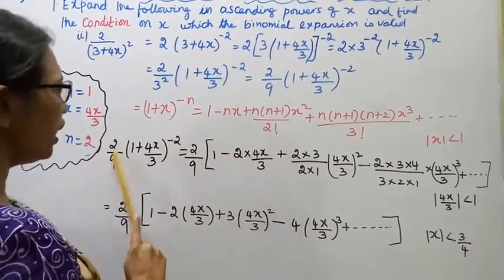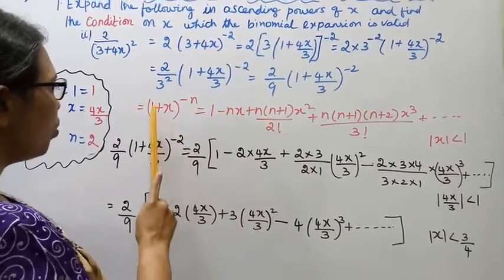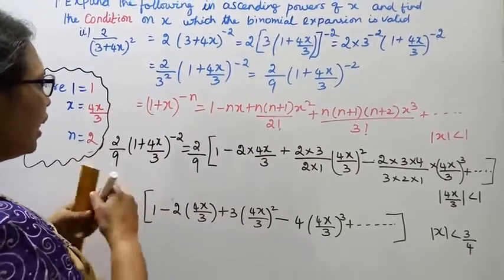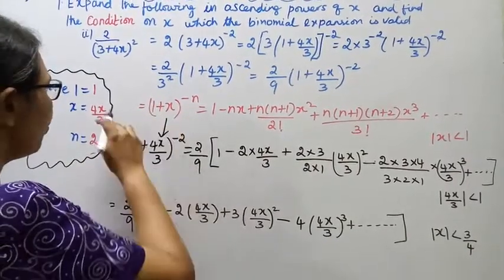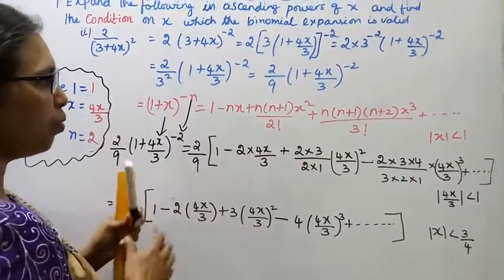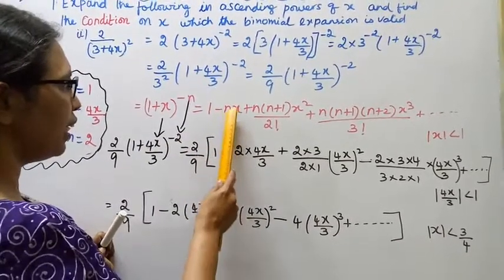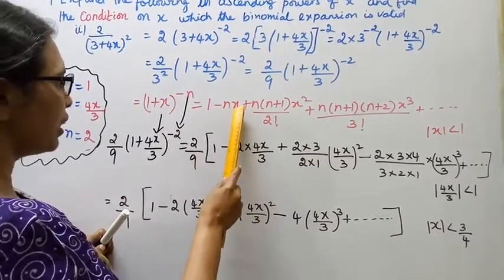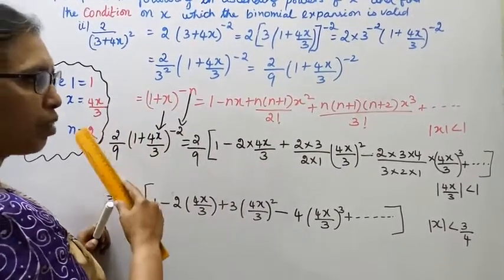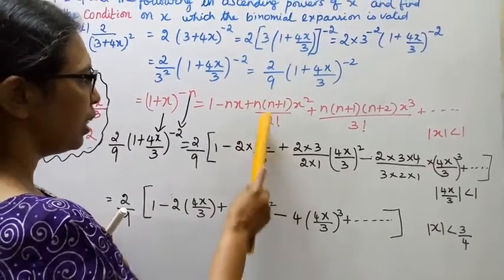We have 2/9 × (1 + 4x/3)^(-2). Here, substituting into the formula: x is replaced by 4x/3, and n is equal to 2. Substitute these values carefully to avoid mistakes — it is straightforward.